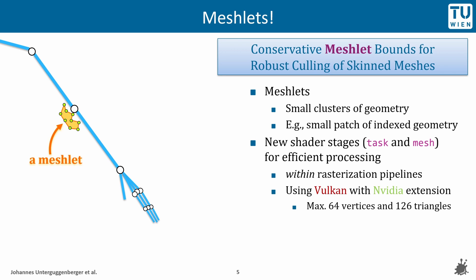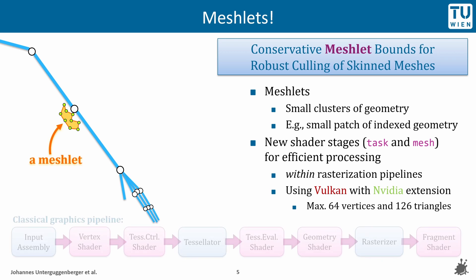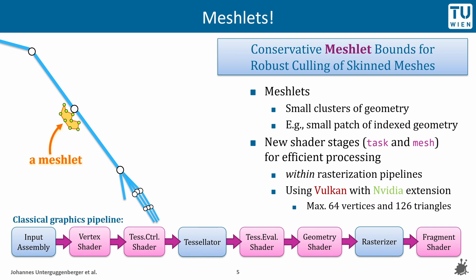A Meshlet is a small cluster of geometry, which is a small patch of the original mesh's vertices and indices. New shader stages, which were introduced in 2018 as part of Nvidia's Turing Microarchitecture, enable efficient processing of such small clusters, given that they obey certain defined limits. The new task and mesh shader stages are to be used within rasterization-based graphics pipelines.